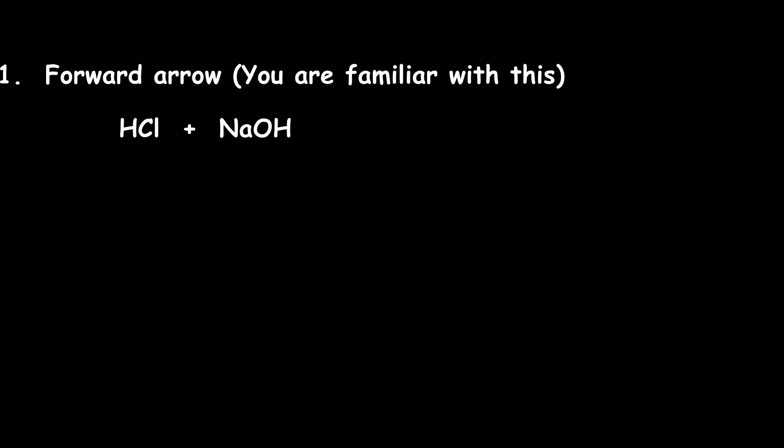The first type of arrow is the forward arrow. You are familiar with this. As you can see, the reactants are written on the left and the products are written on the right of the arrow.